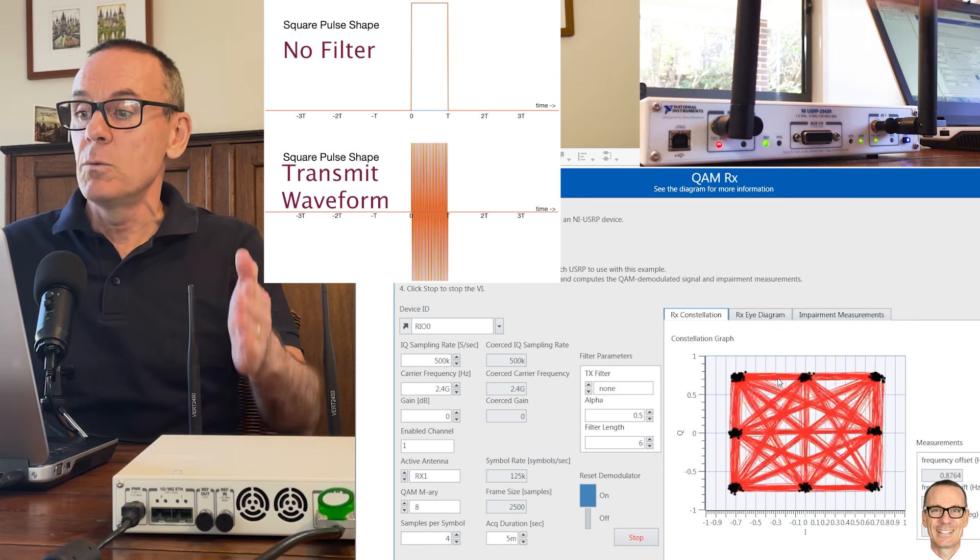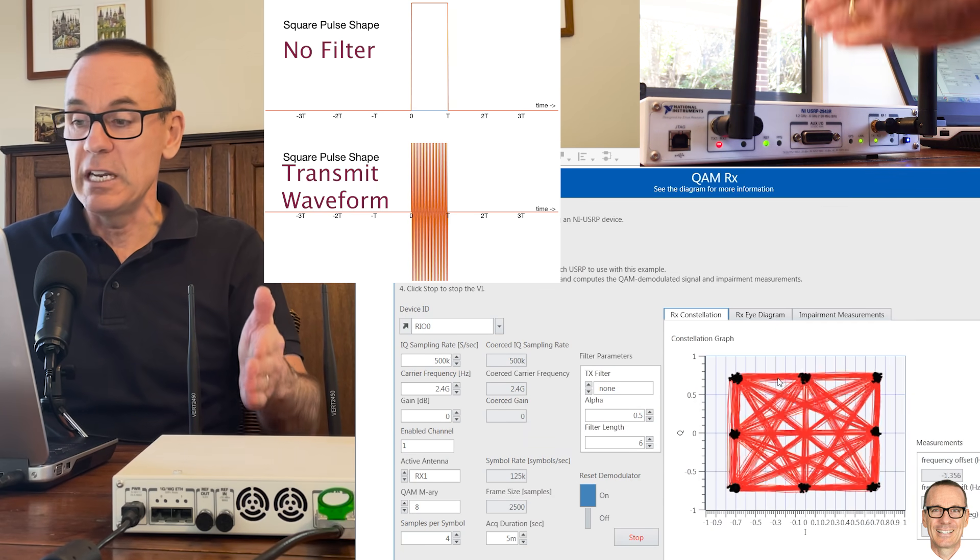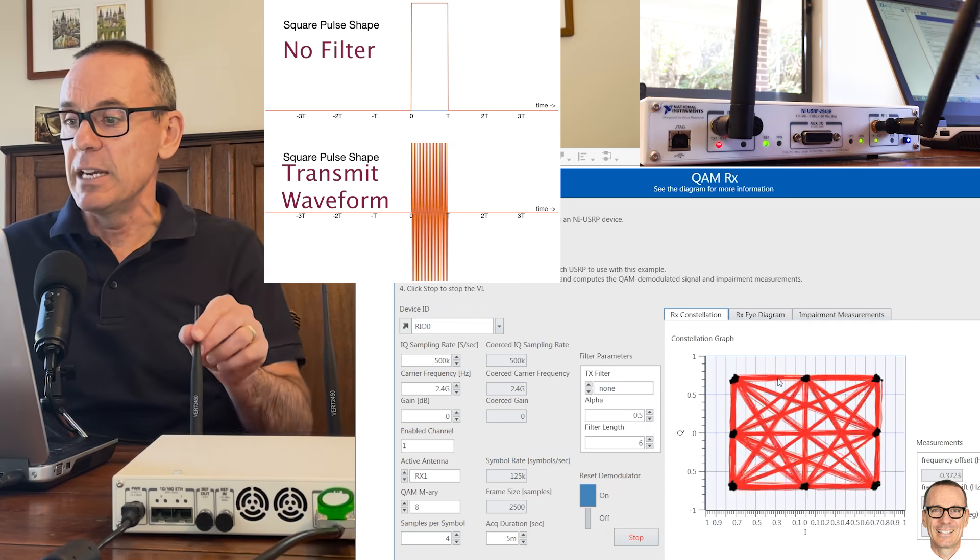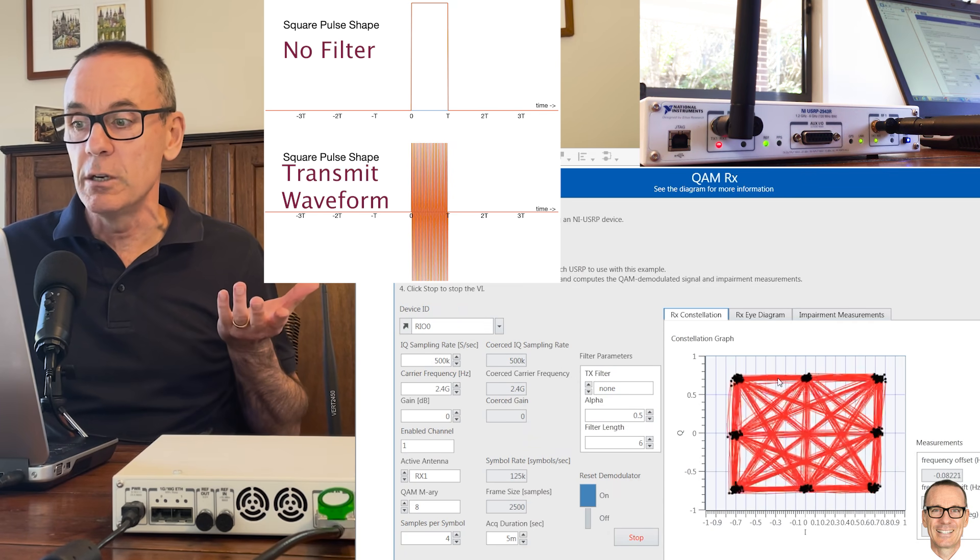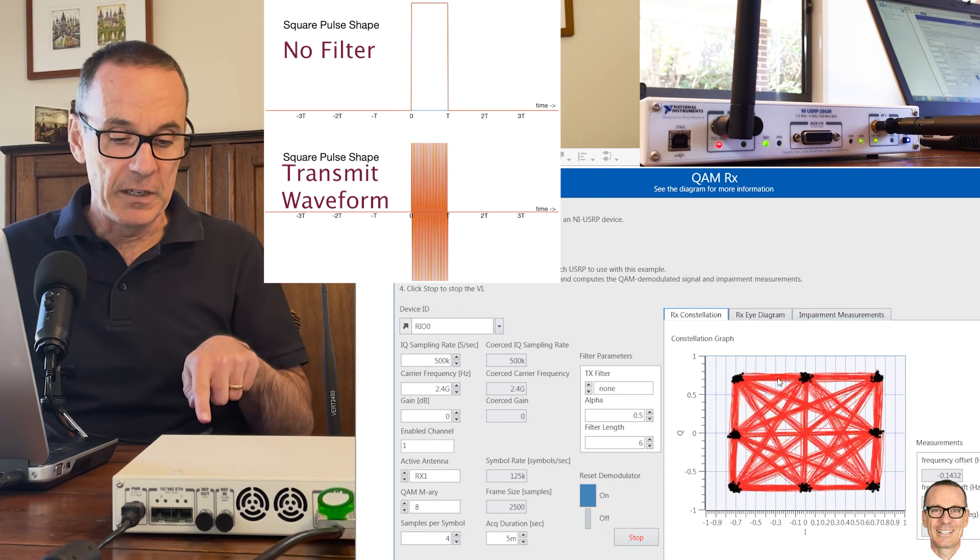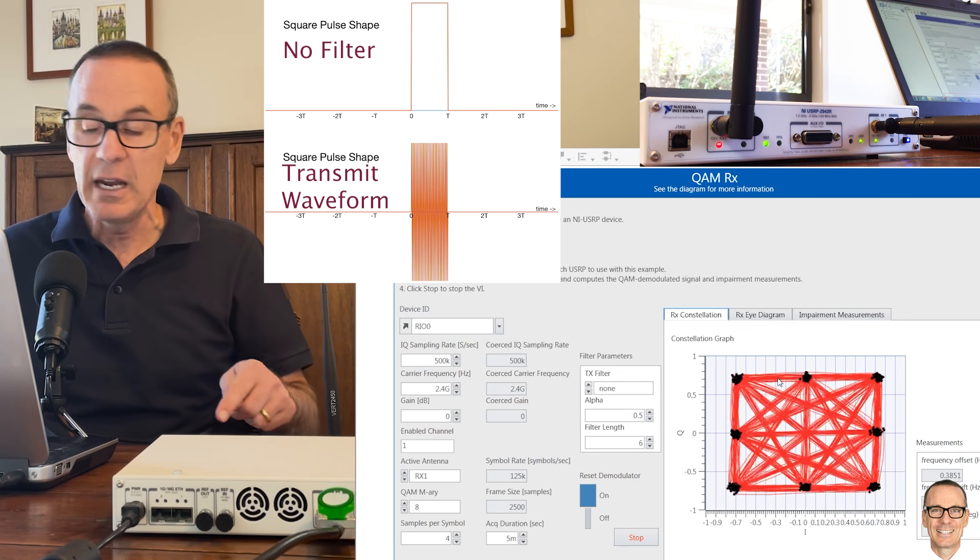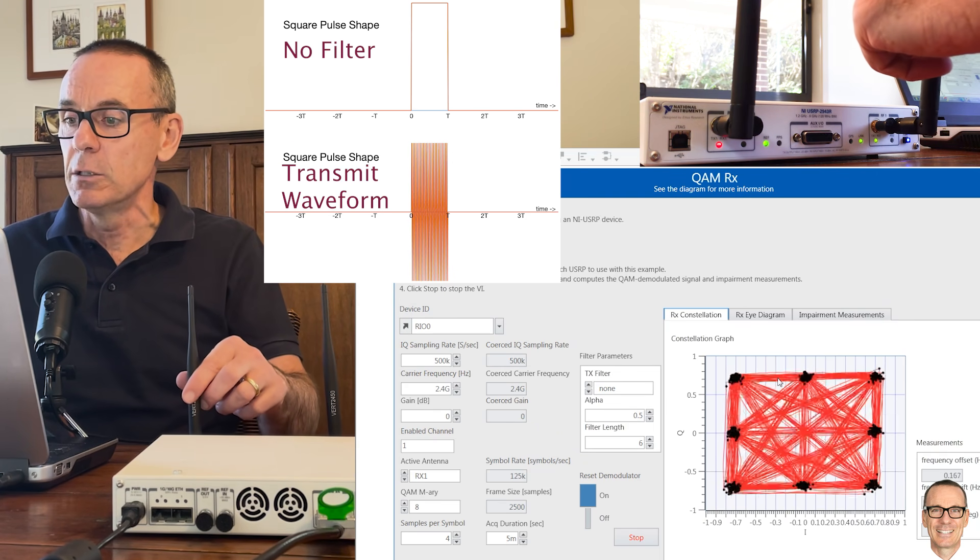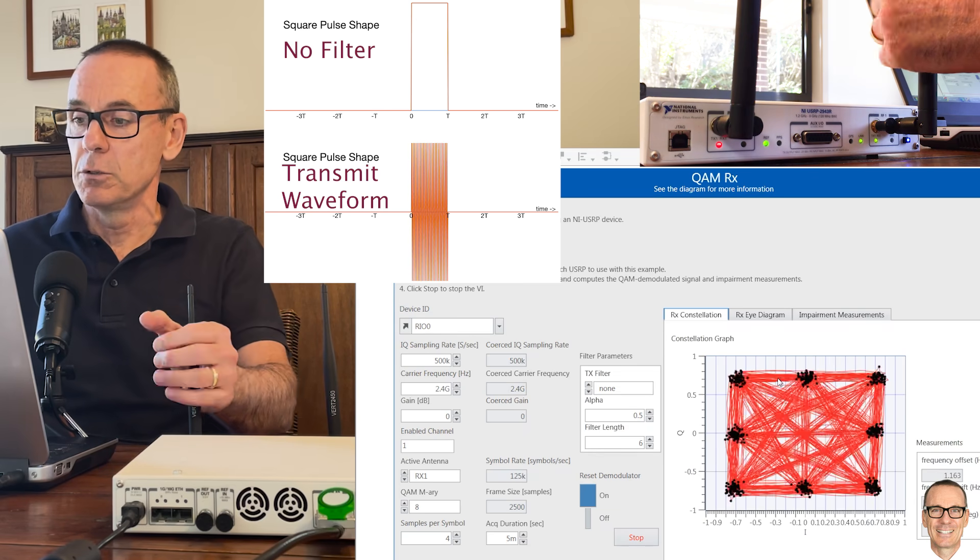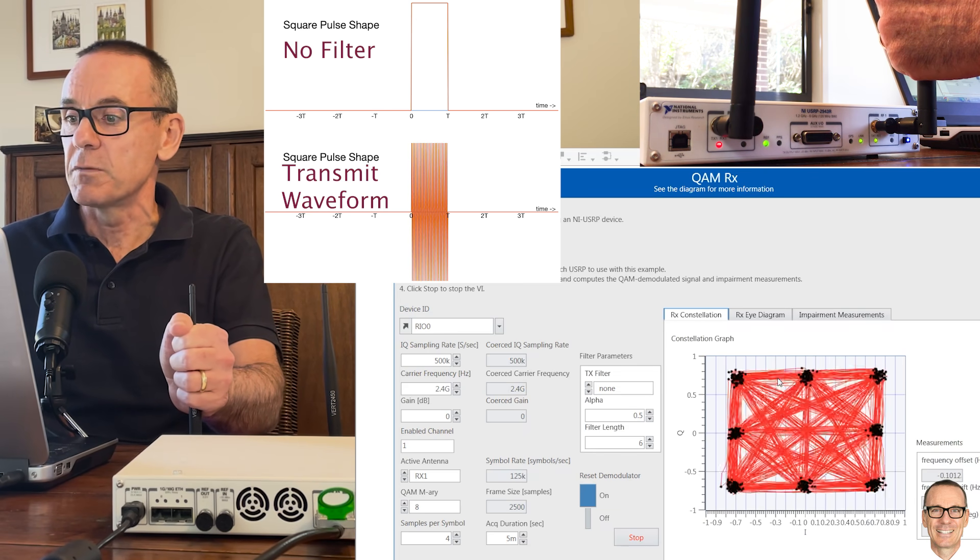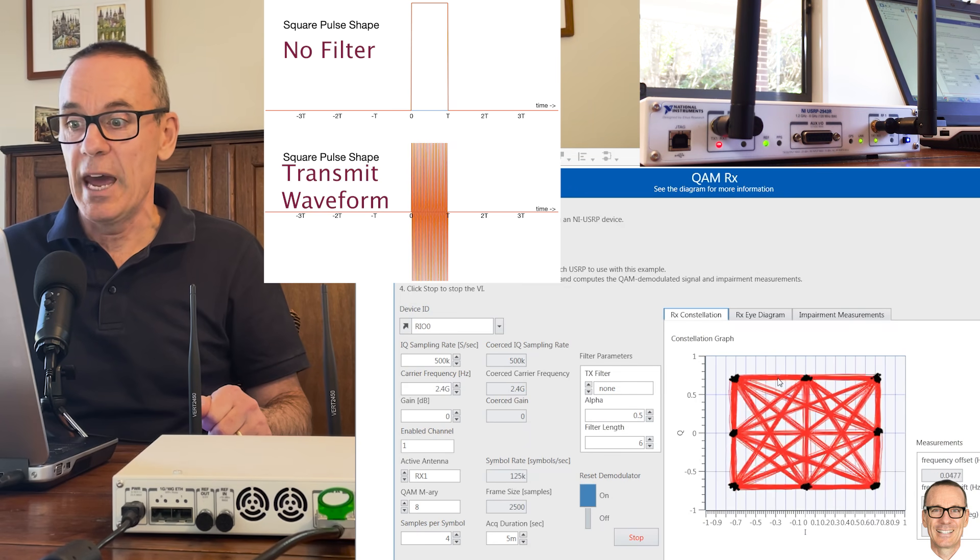If I put my hand in the way we can see that the receive constellation becomes a bit more blurry but still in this case for this signal to noise ratio you're not going to be making any errors. Even if I move the antenna down here to adjust the gain or affect the coupling it still has a good signal to noise ratio. Even if I hold the antenna you can see that the spreading out of the points is not too bad.